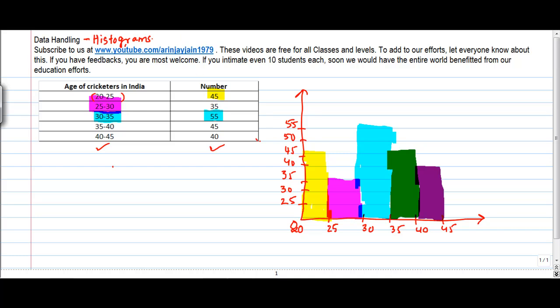now you will not have the luxury of having all these different colors as you prepare your graphs but this is just more to give you kind of an idea. Now what I can also do is that this 20 to 25 graph basically represents 45 students so what I can do is I might as well write 45 here 25 to 30 35 55 45 40